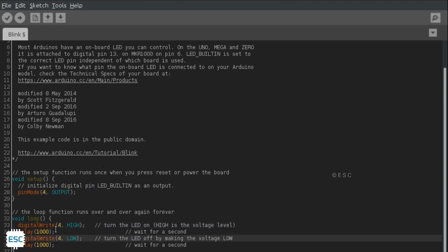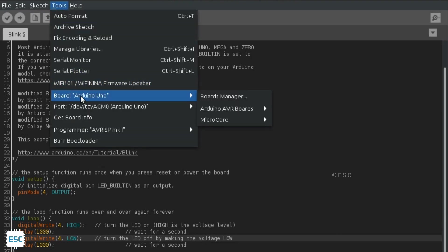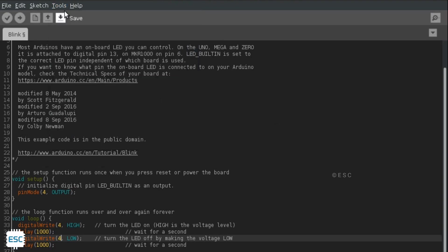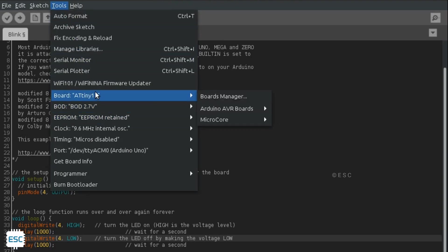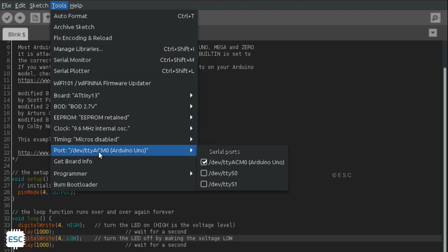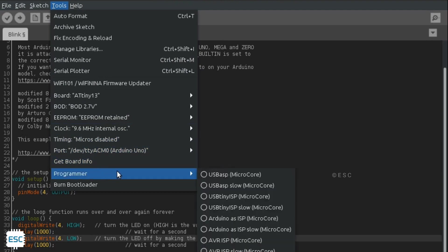Now select board as Microcore ATtiny13, choose the correct port. Next, change the programmer to Arduino as ISP. This is very important.